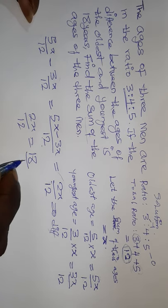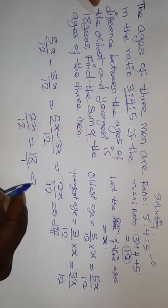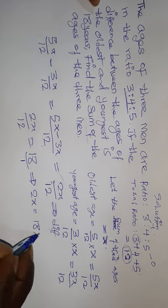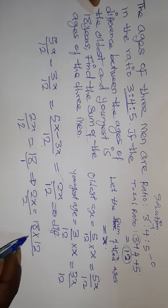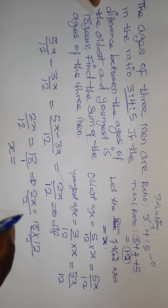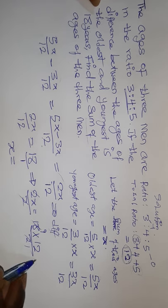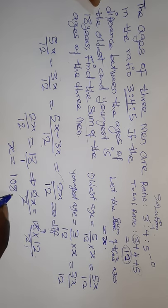By cross-multiplying, we can say that 2x equals 18 multiplied by 12. We can divide through by 2, so x equals 9 times 12, which is 108.